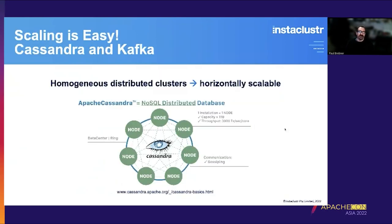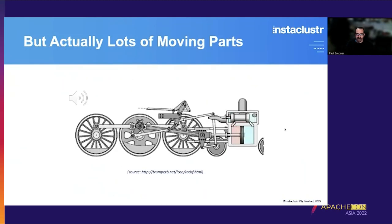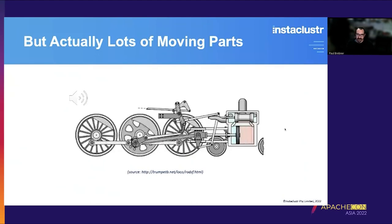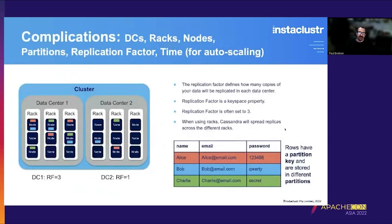Scaling is easy, particularly for Cassandra and Kafka, because they've been designed to provide linear horizontal scalability on commodity hardware. Cassandra uses a ring architecture — you can add nodes to get increased scalability and it's really easy to do. But there are lots of moving parts in any real system, including data centers, racks, nodes, partitions, replication factor, and time for auto scaling. Cassandra and Kafka both use a partition key as an important architectural component.